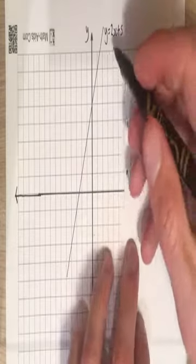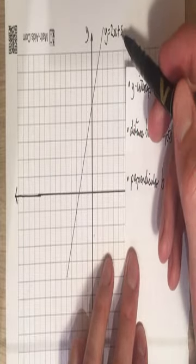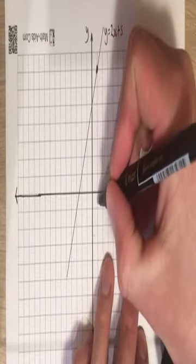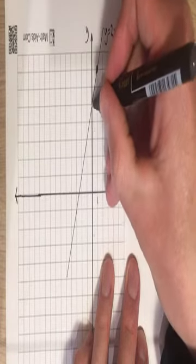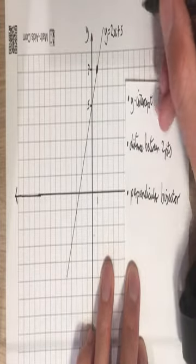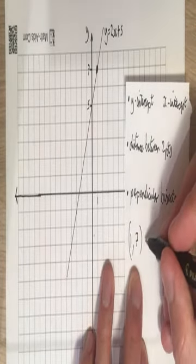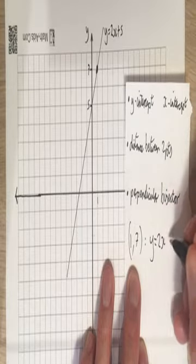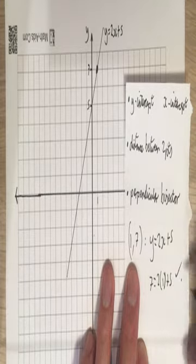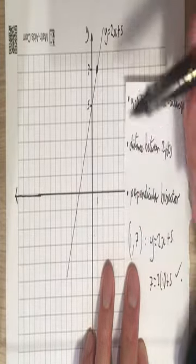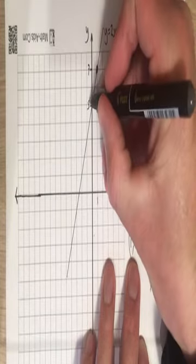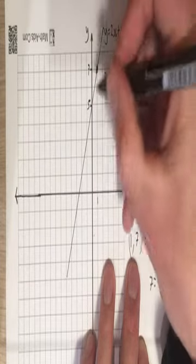Here's a line on a coordinate grid. This is the line y equals 2x plus 5. If you don't believe me, we can check some points randomly. At x equals 1, y is 7. Let's check: y equals 2 times 1 plus 5 — that does work. Every other point on here works too. The y-intercept is at 5 — that's the number where this line crosses the y-axis.